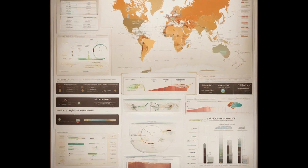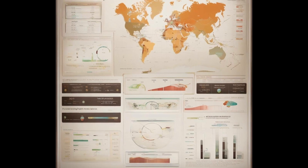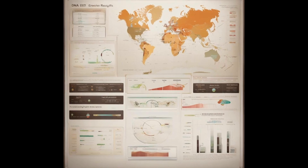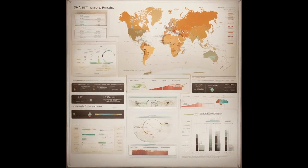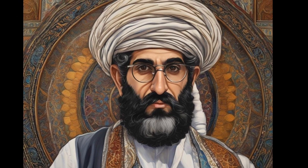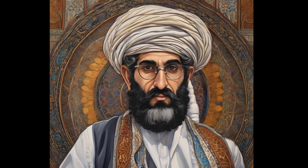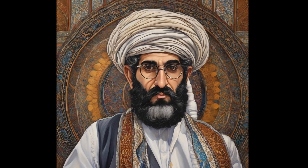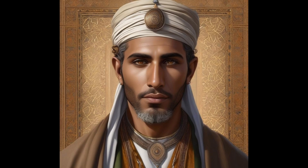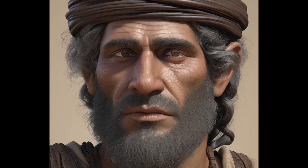Challenges to Monolithic Narratives: Genetic findings can challenge monolithic narratives about Jewish identity by demonstrating the complex and multifaceted nature of Jewish ancestry. For example, the connections to various populations, such as those in North Africa, the Middle East, and Europe, influence modern understandings of who is considered Jewish and how that identity is expressed today.